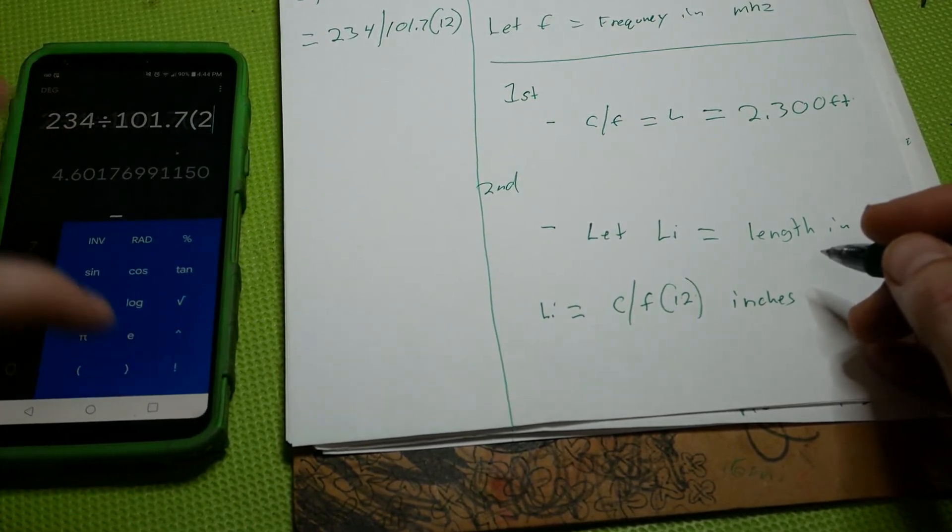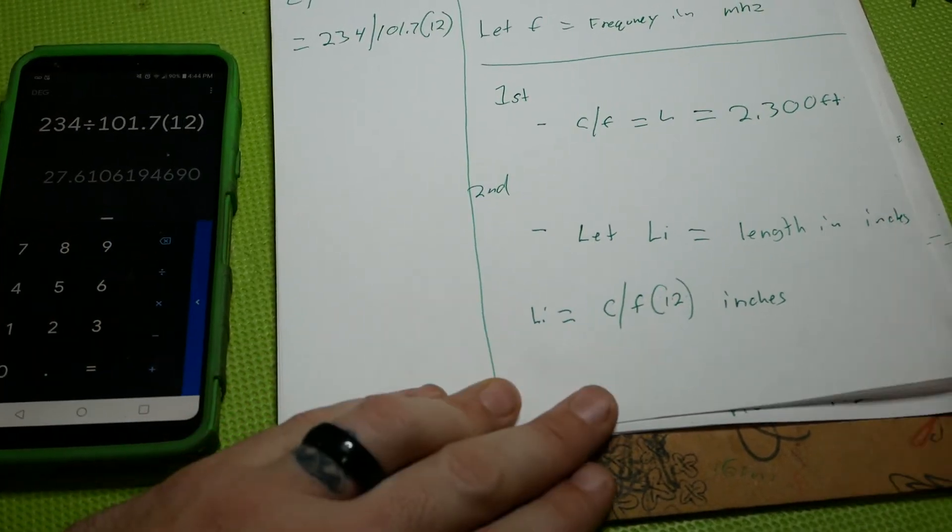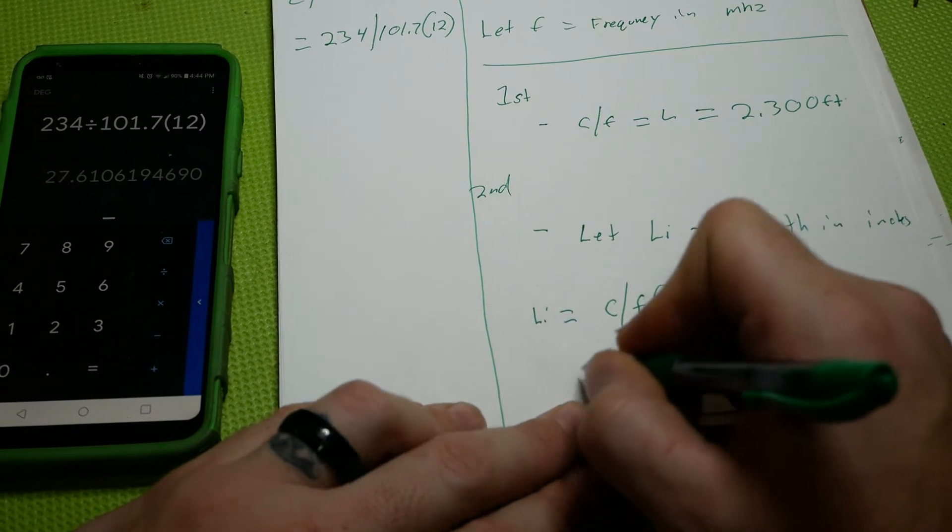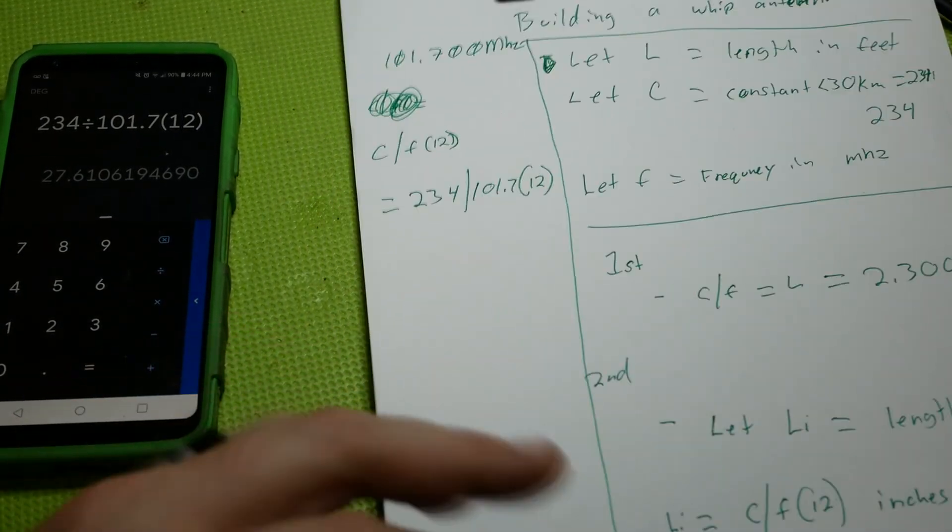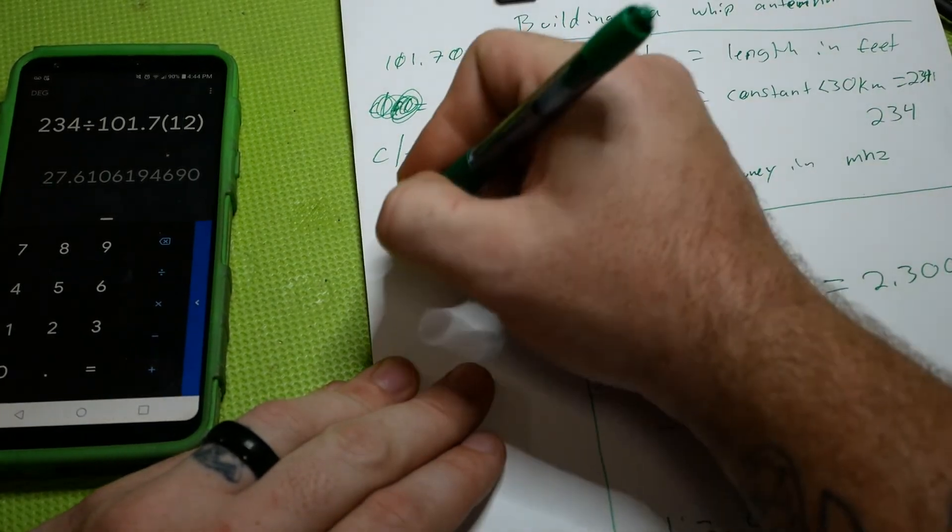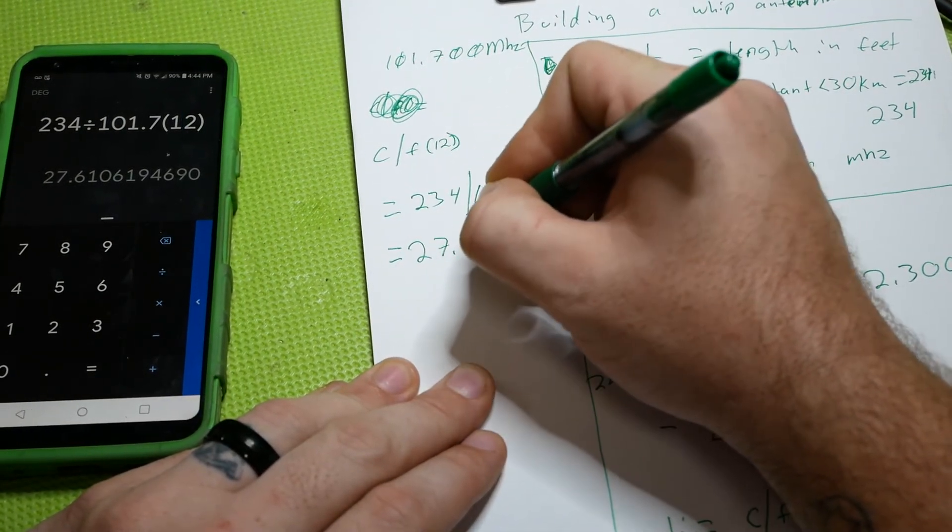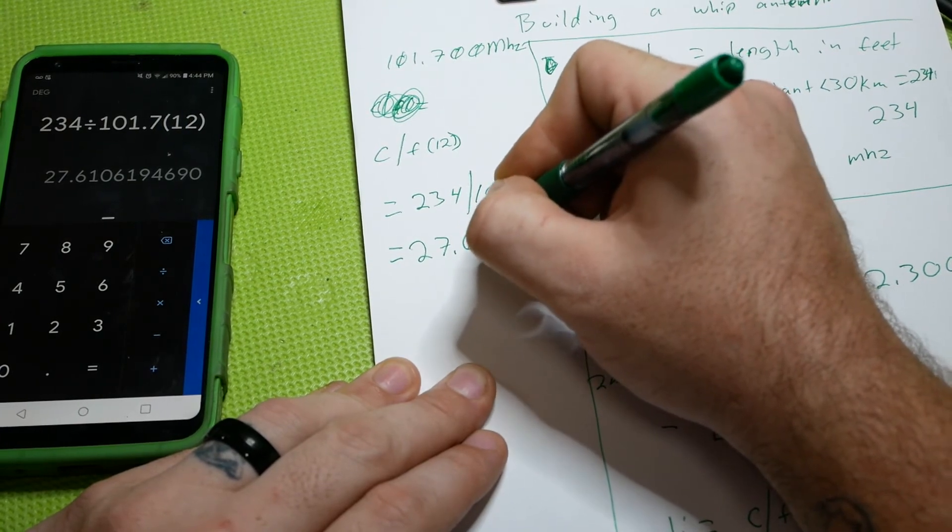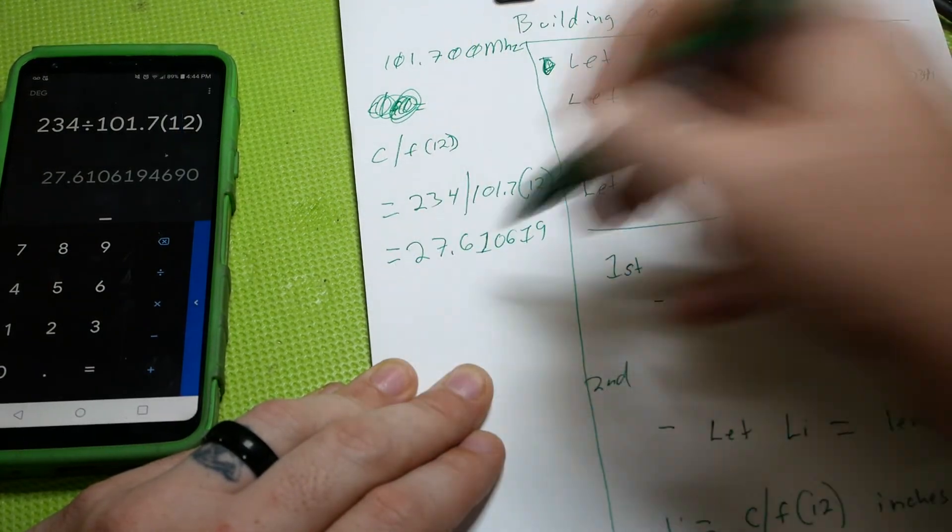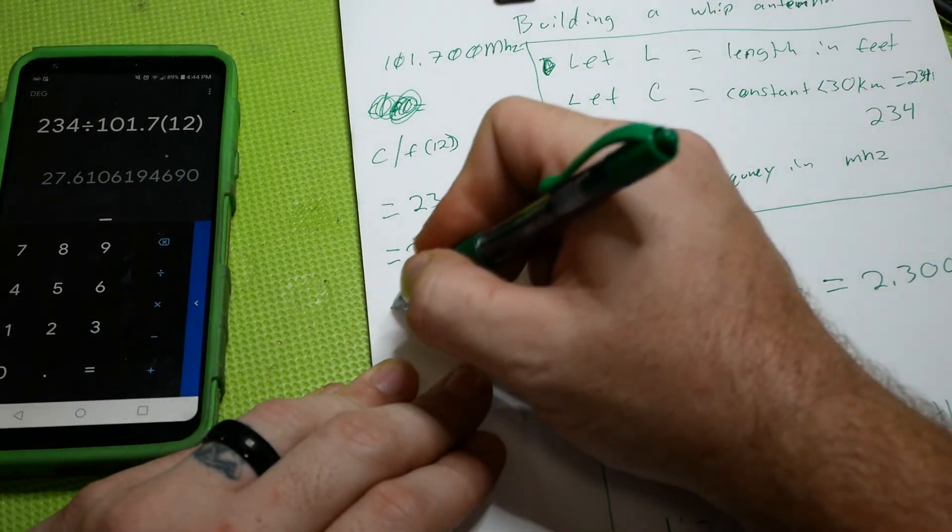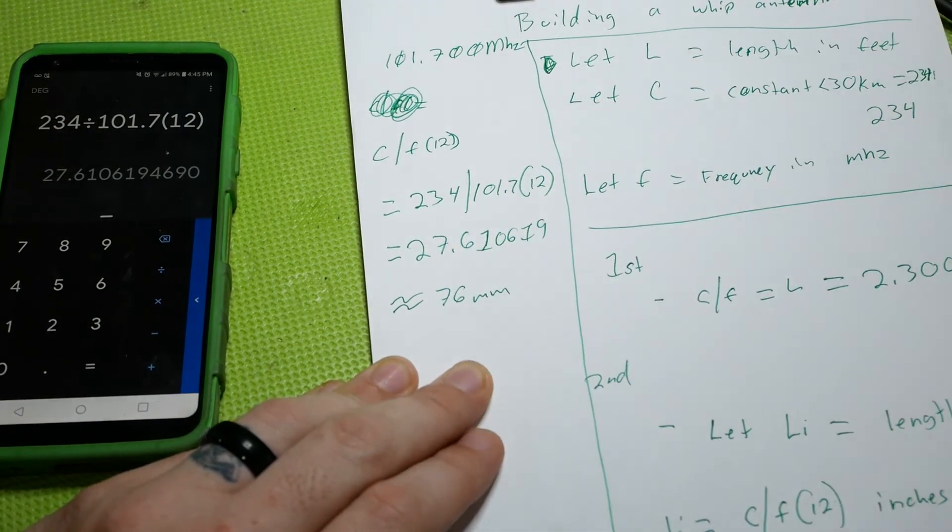Which is important because I like working in inches on anything smaller than one meter. So if you were to do your constant and everything like that, this answer here is equal to 27.610619, etc. inches, right? Which is approximately 76 millimeters.